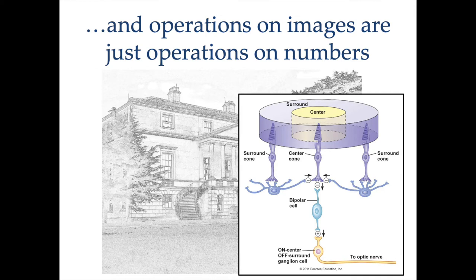There is an analogy with something that happens in our own eyes. Inside our retina, we have photoreceptors that can sense light, and they are connected together with horizontal cells. These horizontal cells take the input from the photoreceptor and inhibit neighbors — so it is as if they were doing this sort of subtraction. One of the first operations that happens in our visual system, already at the level of the retina but also in many animals, is edge detection.